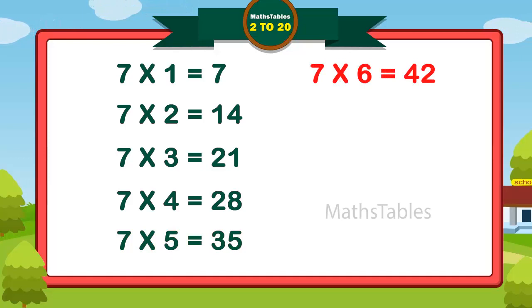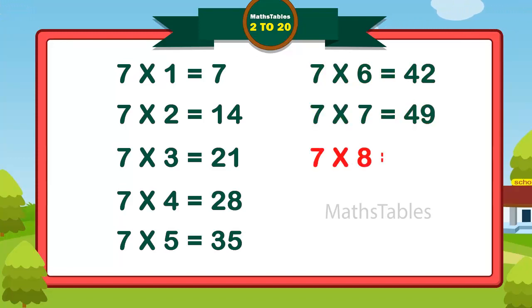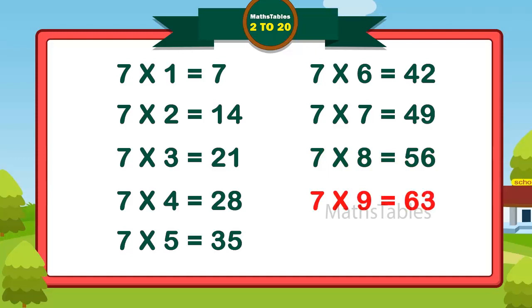7 sixes are 42. 7 sevens are 49. 7 eights are 56. 7 nines are 63. 7 tens are 70.